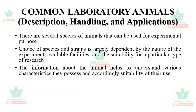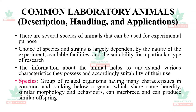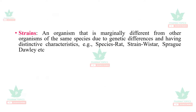A species is a group of related organisms having many characteristics in common, ranking below a genus, which share the same heredity, similar morphology and behaviors, can be interbred, and can produce similar offspring. For example, rat is a species and mice is a species.